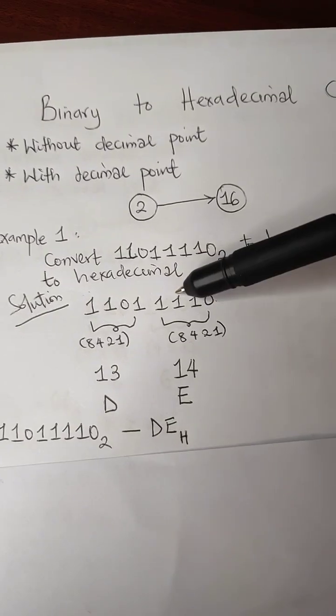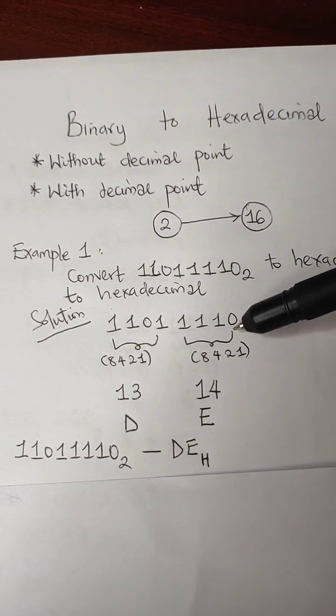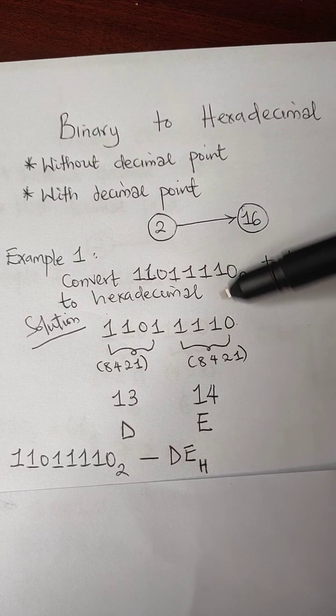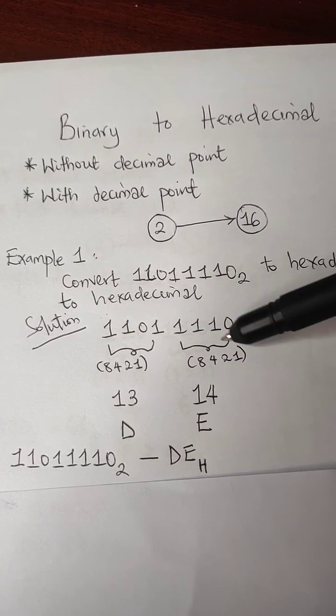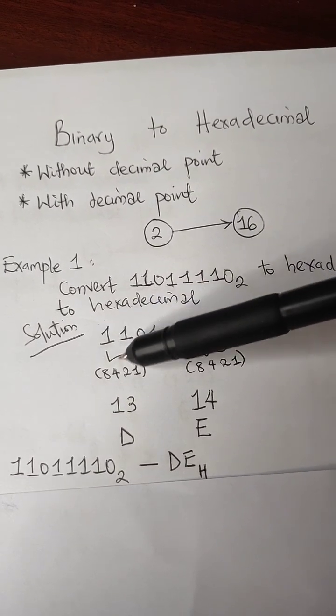So with that 4, we are going to split our values 4 digits per set. With this given value, I have 0111 as a set and 1011 as a set.